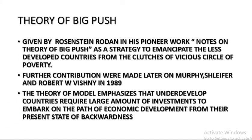Further contribution was made by Murphy, Shleifer, and Robert Vishny in 1989. Their model focuses on the fact that underdeveloped countries require a huge amount of investment if they want to develop their economy, because they are caught in the vicious circle of poverty due to backwardness. It is the government which is required to give a big push — a big stimulating package — to the economy.